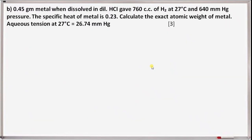Next question B: 0.45 grams of metal, when dissolved in hydrochloric acid, gives 760 cc of hydrogen at 27°C and 640 mmHg pressure. The specific heat of the metal is 0.23. Calculate the exact atomic weight of the metal. Aqueous tension given at 27°C is 26.74 mmHg.